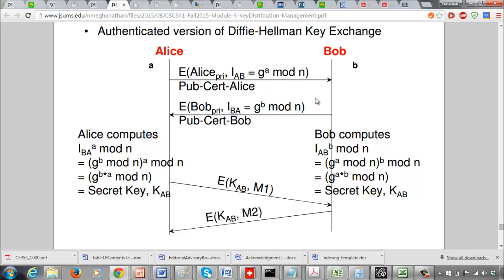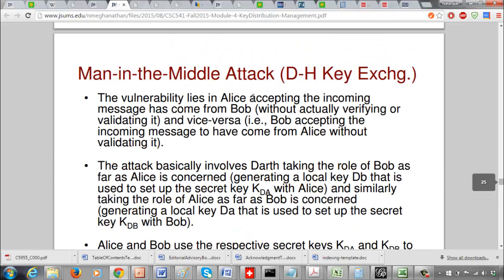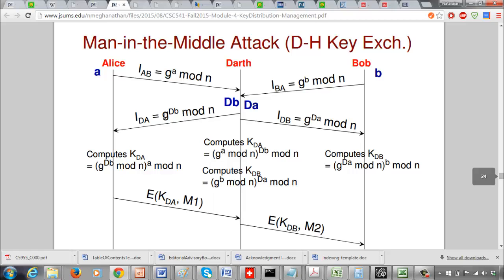Similarly, Bob computes G^b mod n, encrypts it with his own private key, and sends his public key certificate to Alice. Alice extracts Bob's public key from his certificate by decrypting with the certifying authority's public key, then uses it to get G^b mod n. By doing this, we ensure that nobody like Darth can send these messages. If Darth tries to send G^(db) mod n appearing to come from Bob via IP spoofing, he would need to encrypt it with Bob's private key — which he cannot access.